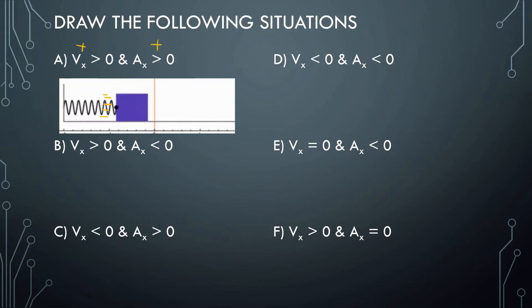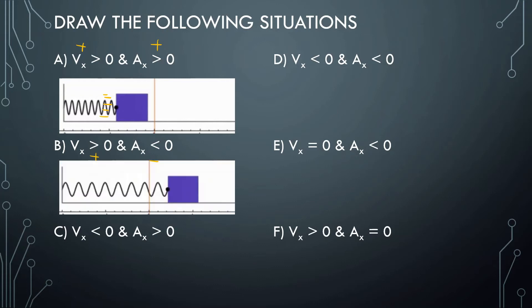This one, the velocity is positive but the acceleration is negative. So how this looks is this box is moving to the right, but this spring is trying to pull it back, so the acceleration is going to be negative.